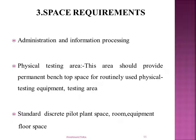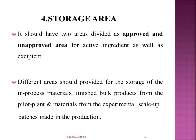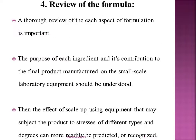Equipment should be made portable wherever possible so it can be stored in small stores. The storage area should be divided into approved and unapproved areas for active ingredients as well as excipients. Different areas should be provided for in-process material, finished bulk product from the pilot plant, and material from experimental scale batches made in production. A thorough review of each aspect of the formulation is very important — the purpose of each ingredient and its contribution to the final product should be understood by every person involved in the process.